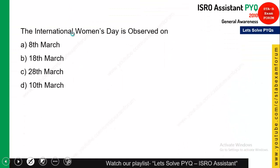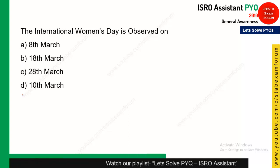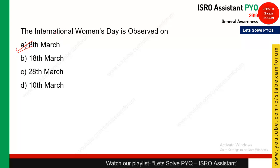The International Women's Day is observed on which of the following days? As you know, 8th March is observed as International Women's Day, so option A was the right answer for this question.